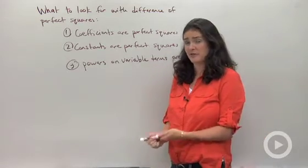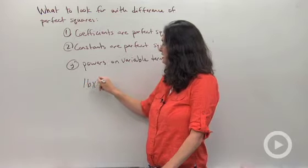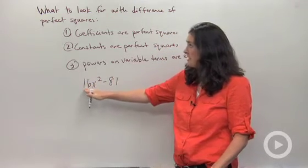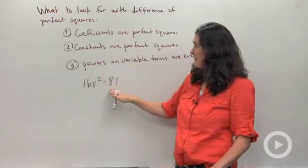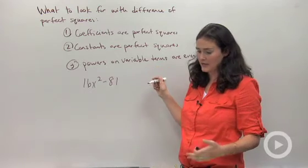Let me show you some examples of things that are perfect squares. Something like this: 16x² - 81. I have a coefficient that's a perfect square, a constant that's a perfect square, and an exponent that's even, a power that's even.